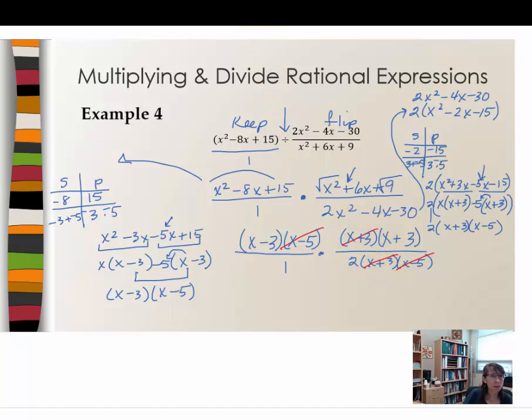So whatever remains quantity x - 3, quantity x + 3, 1 times 2 in the denominator. So it looks like our final rational expression is the quantity x - 3 times quantity x + 3, all divided by 1 times 2, which is 2. So remember that when you have division of rational expressions, you have to change division to multiplication. And the rational expression that comes after it will need to be flipped or inverted.